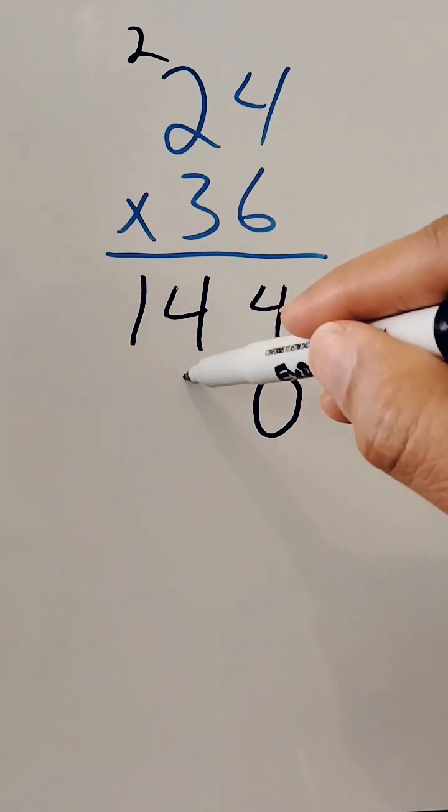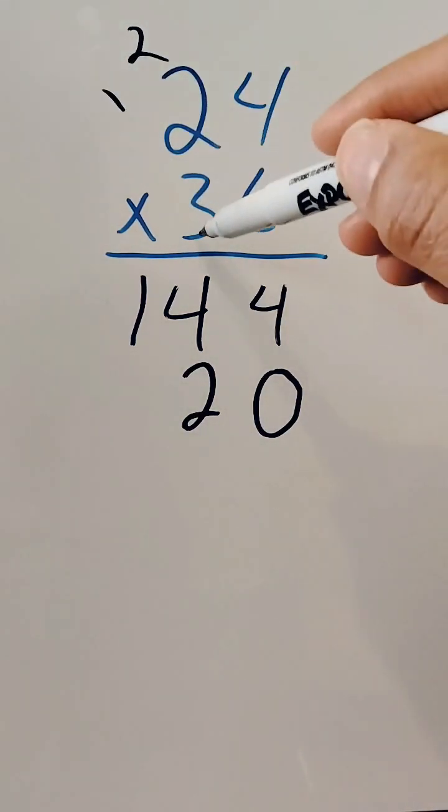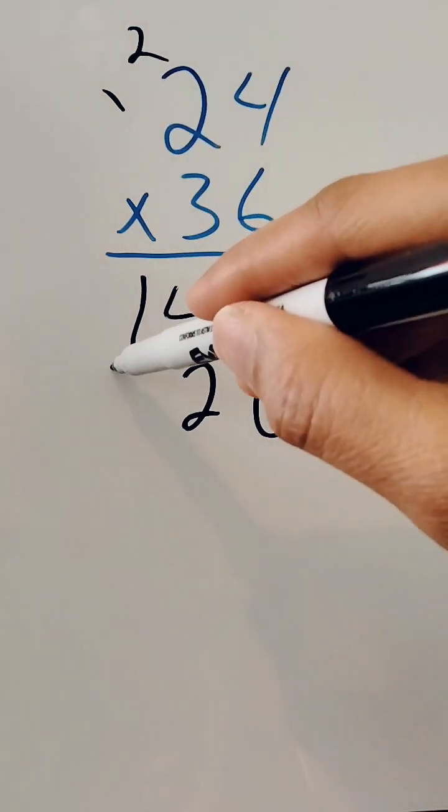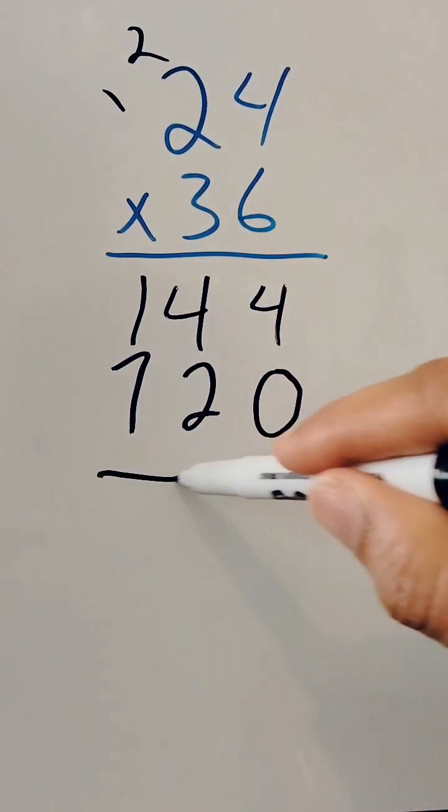So 3 times 4 is 12. Let's carry our 1. And 3 times 2 is 6, plus 1 is 7. So that's 720.